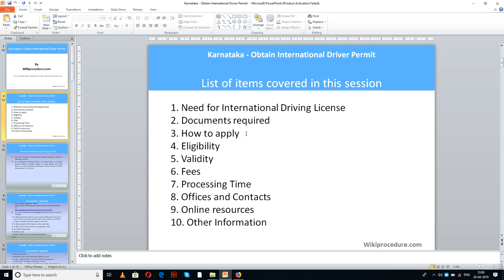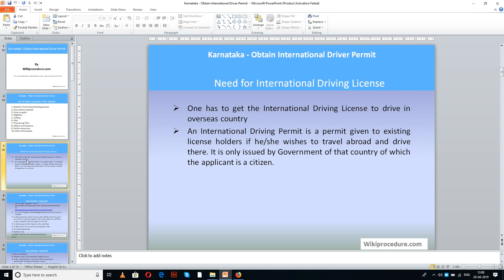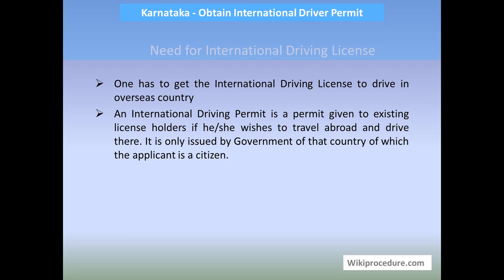The list of items covered in this session today: need for international driving license, documents required, how to apply, eligibility, validity, fees, processing time, offices and contacts, online resources, and other information. This procedure is sponsored by WikiProcedure.com.